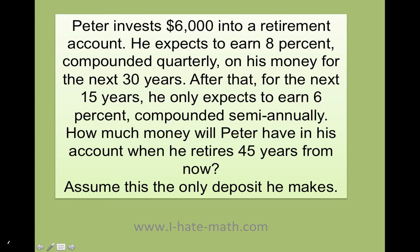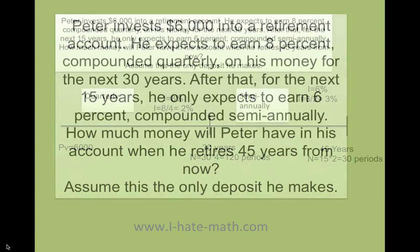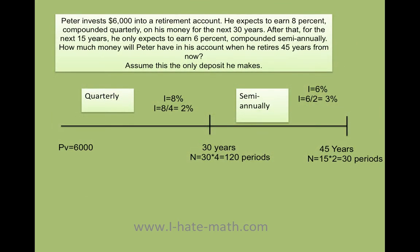Basically, you need to understand that he's only going to be making one deposit. So let's break down this problem. Look what's happening — he's going to be putting this money in for 45 years. For the first 30 years, he's going to be compounding quarterly. That tells me that instead of doing 30 years, he's going to be compounding over 120 periods, because 30 times 4 equals 120.